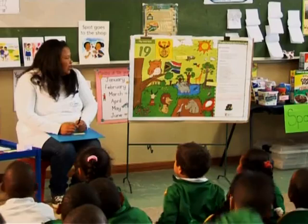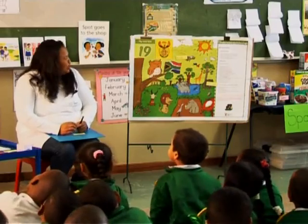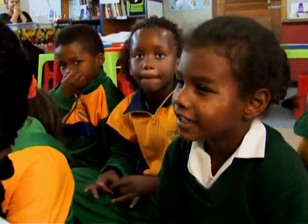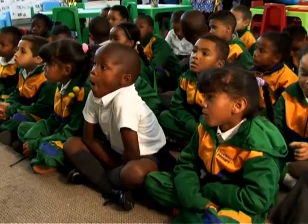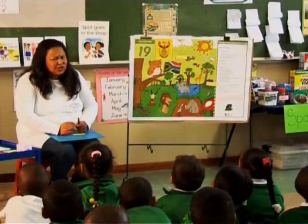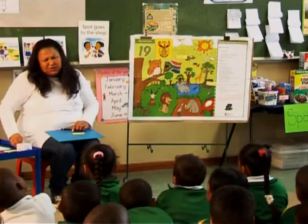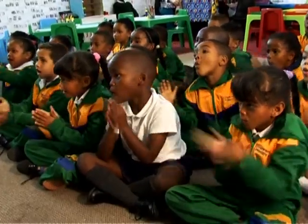A good way to practice phonemic awareness is to clap the syllables in words. Logan, what can you see on this picture in front of you? I can see a flower. What sound does flower start with? Now can we try clapping flower? Flower.